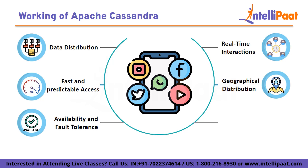Then we have geographical distribution. Your social media platform is global, and Cassandra can replicate data across many regions. So if a user in one part of the world posts a photo, a user in another part can see it without delay.